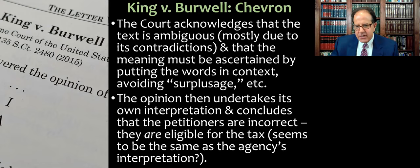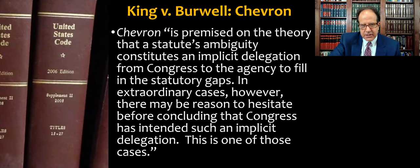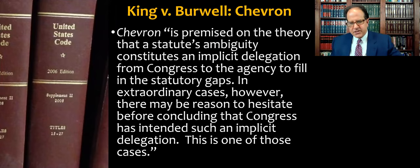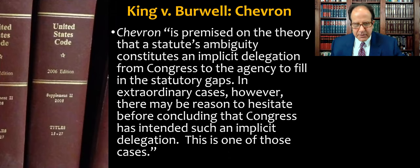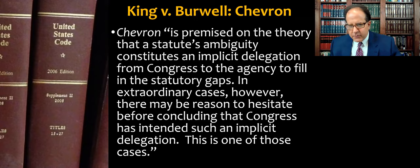In other words, the petitioners are eligible for the tax credits. And the interesting thing is that this seems to be the same as the agency's interpretation. Here's a key quote about Chevron: Chevron is premised on the theory that a statute's ambiguity constitutes an implicit delegation from Congress to the agency to fill in statutory gaps. In extraordinary cases, however, there may be reason to hesitate before concluding that Congress intended such an implicit delegation — and this is one of those cases.